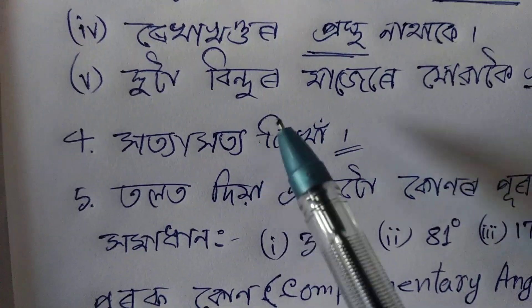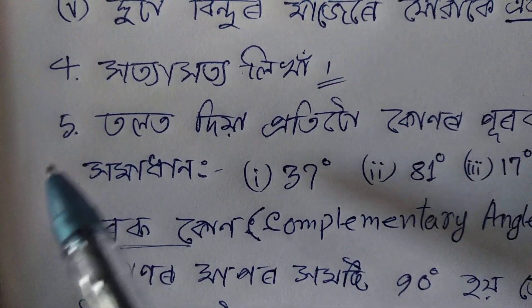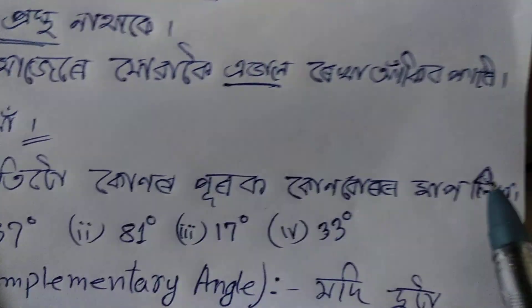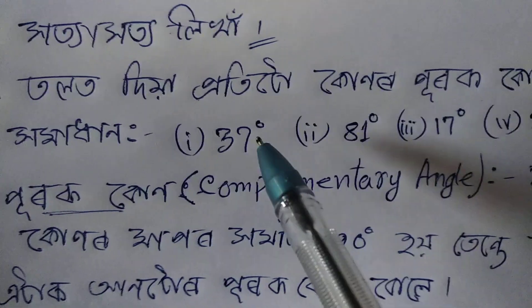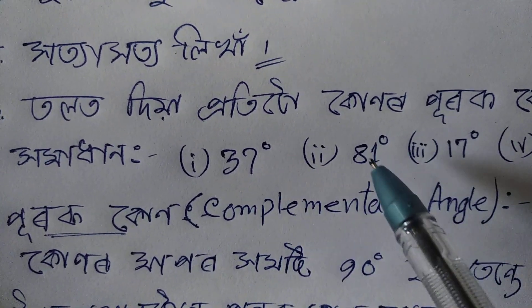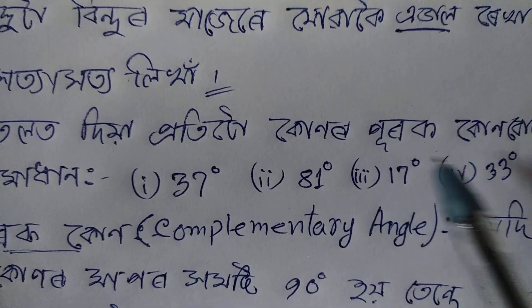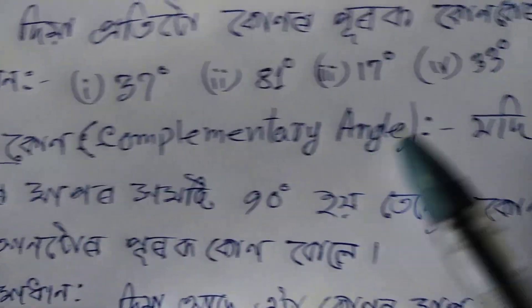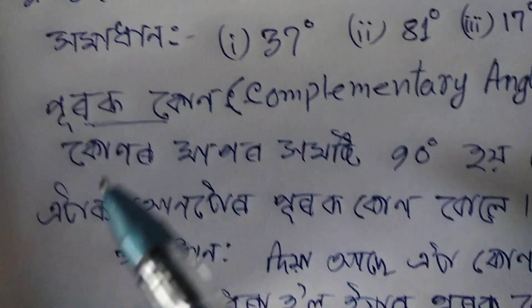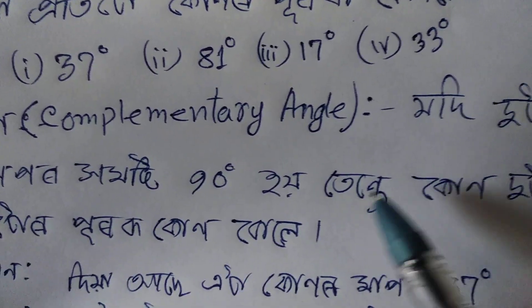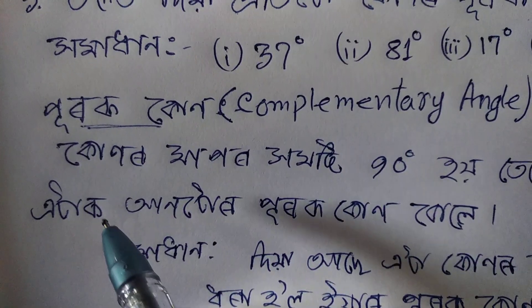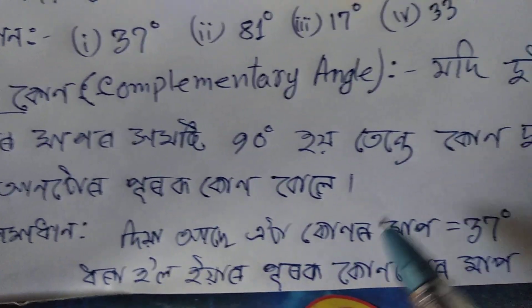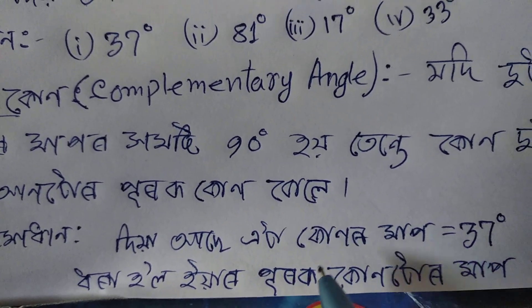Please comment on the question. Thanks for your question. Number two: how many times have you read the map? The map is 37 degrees, 81 degrees, 17 degrees. The map is 90 degrees. You said everything is number one. We study the map, 37 degrees. How many times do you study the map?